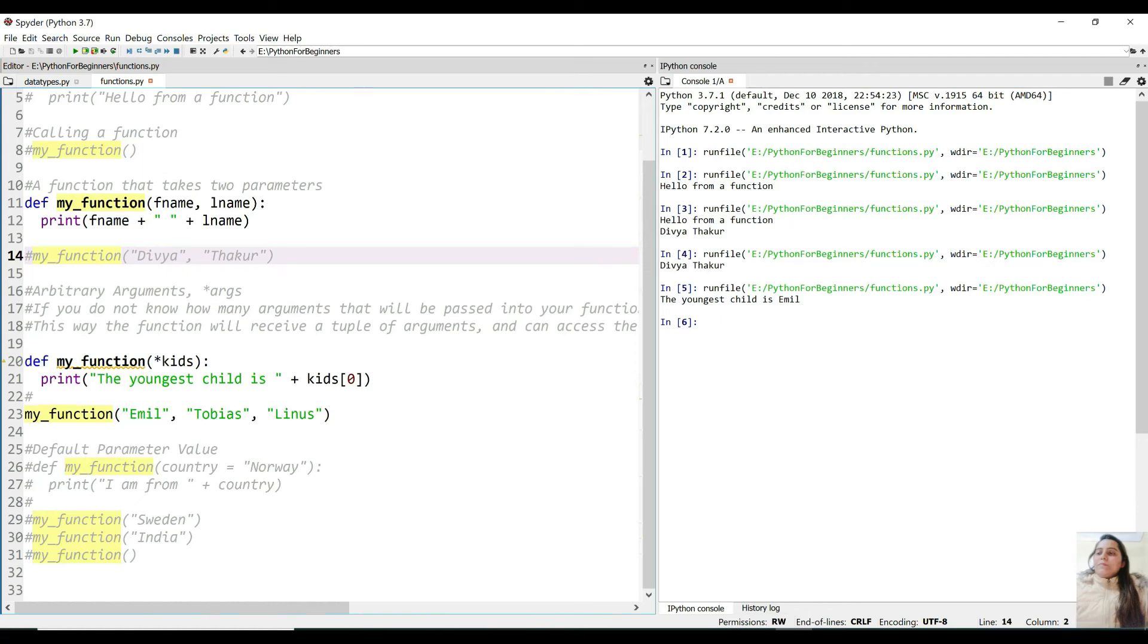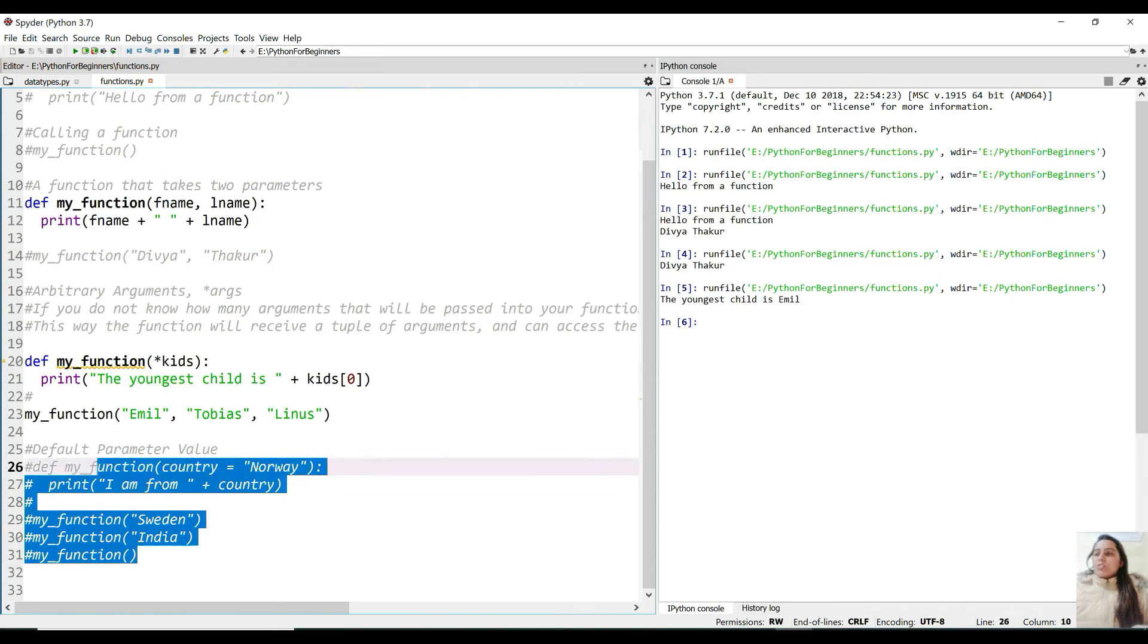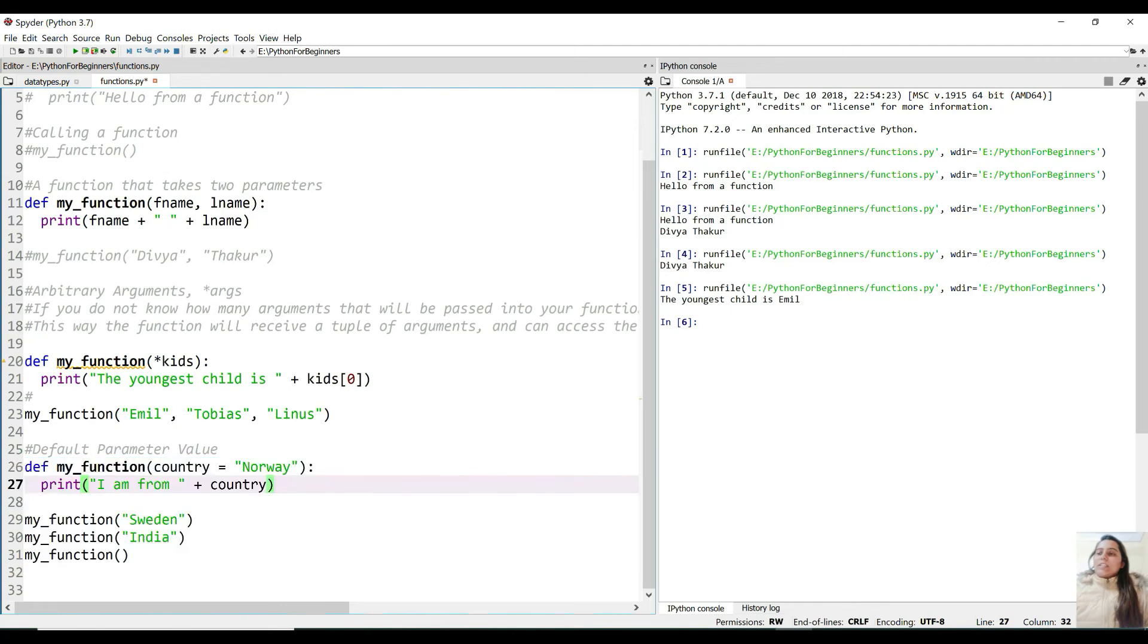Now there are some default parameter values to a function that can be passed. Suppose this is my function over here and this is the parameter which has this default value Norway. My function, if I run this without passing in any parameter first, I am from Norway will get printed.